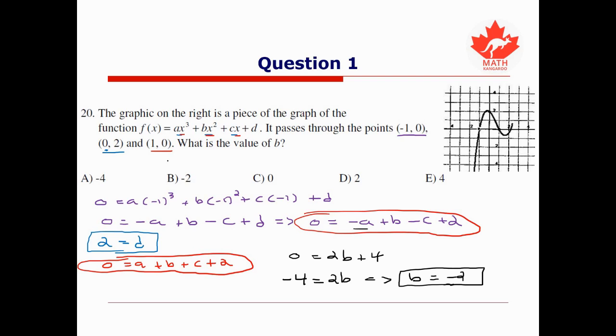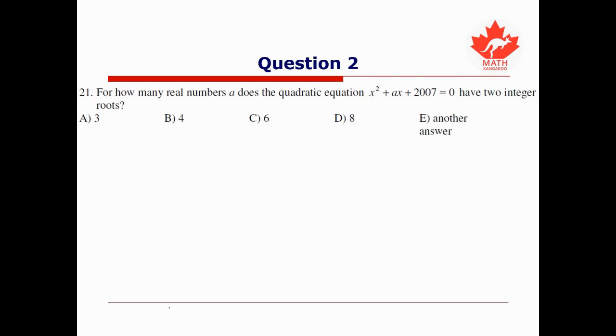For the second question, we're asked: for how many real numbers a does the quadratic equation x² + ax + 2007 = 0 have two integer roots? Again, I highly encourage you to pause the video right now, try this question for yourself, and then come back and compare it with my solution.